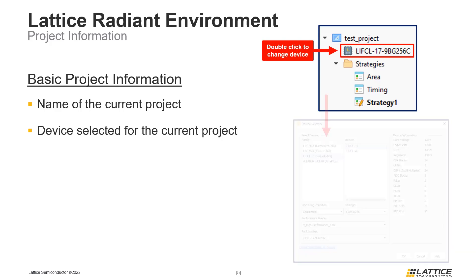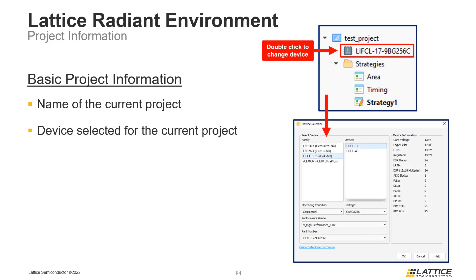Double-clicking will open the Device Selector window, which is similar to the one encountered during project creation. The current device for a project can be modified using any of the fields in the window, and information about the current device is displayed on the right side of this window. If any changes are made in the Device Selector window, click the OK button in the bottom right to confirm the changes.